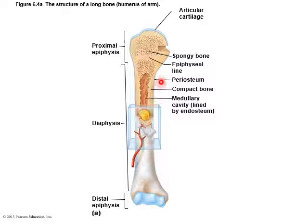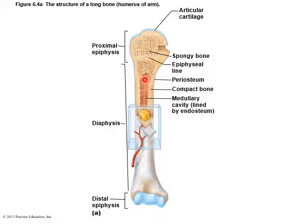There's a covering on the bone called the periosteum. Where the epiphyses and the diaphysis come together is called the epiphyseal line. There's a cavity in compact bone called the medullary cavity. You have the periosteum covering the outside and the endosteum lining the bone on the inside. Peri means around, so periosteum means the covering around the bone. Endo means within — that's the covering that lines the bone from inside.